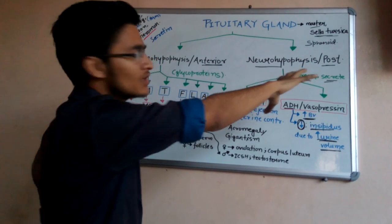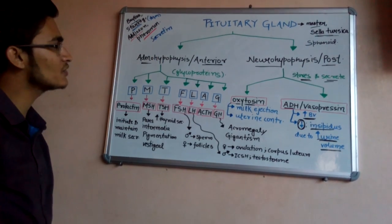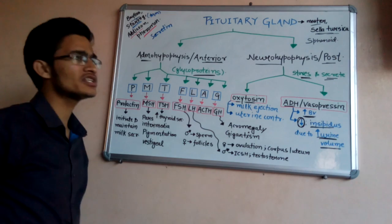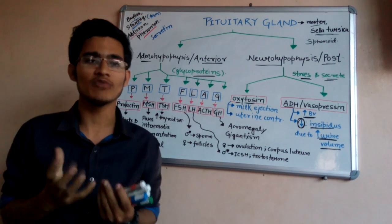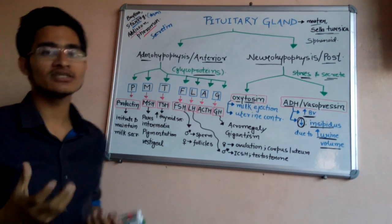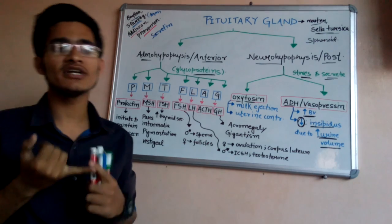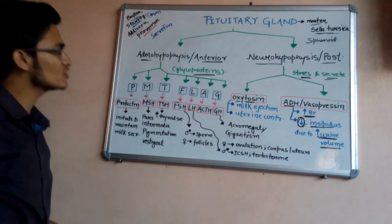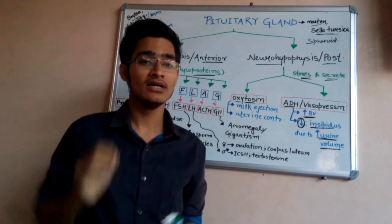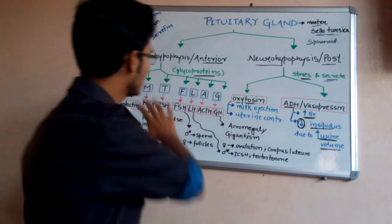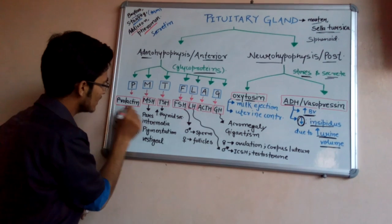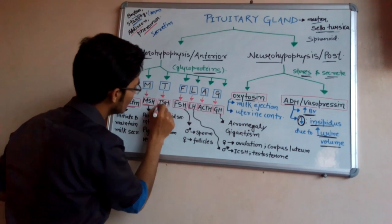Now we come to adenohypophysis, or anterior pituitary, which secretes hormones that are glycoproteinaceous in nature — meaning protein molecules conjugated with glyco-molecules such as disaccharides or polysaccharides. The simple trick to memorize these hormones is 'PMT FLAG': P for Prolactin, M for MSH, T for TSH, F for FSH, L for LH, A for ACTH, and G for GH.